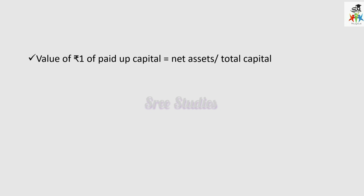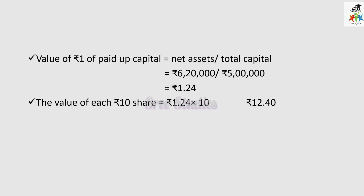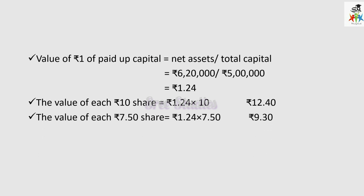Since there are different denominations, we calculate the value of rupee 1 paid up capital. Net asset divided by total capital — the total capital is 5 lakh as seen in the balance sheet — gives us the value of 1 rupee share as rupees 1.24 paise. Substituting for shares of rupees 10 each, we get rupees 12.40. For shares of rupees 7.55 each, we get rupees 9.30. For shares of rupees 5 each, multiplying by 1.24 gives rupees 6.20. This is how we calculate for different denominations of fully paid up shares.